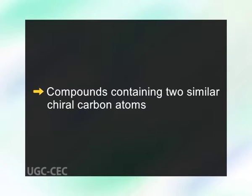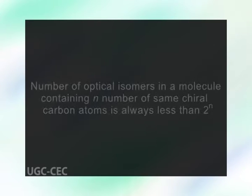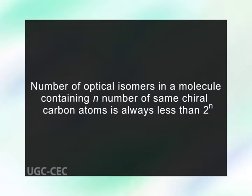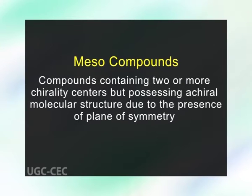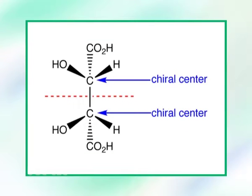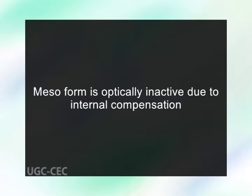Second, compounds containing two similar chiral carbon atoms. The number of optical isomers in a molecule containing n identical chiral carbon atoms is always less than 2 raised to power n. An important example is tartaric acid. Meso compounds contain two or more chirality centers but possess an achiral molecular structure due to the presence of a plane of symmetry. The meso form is optically inactive because the optical rotation caused by one half of the molecule is compensated by the other half, known as internal compensation.